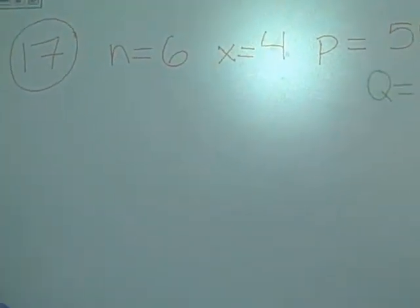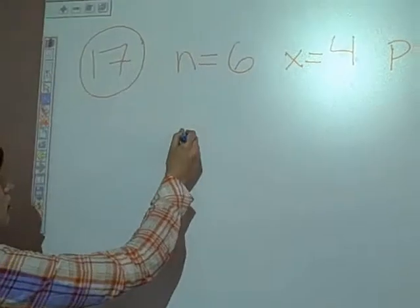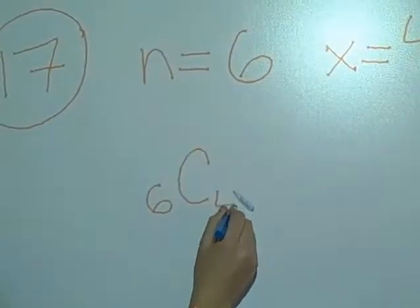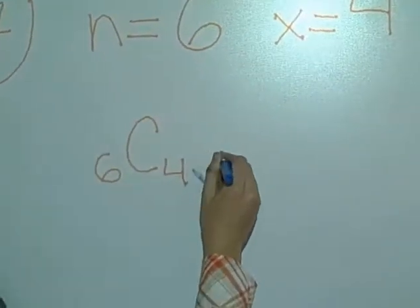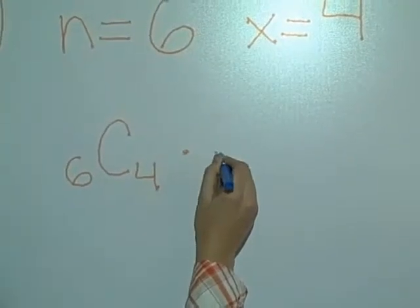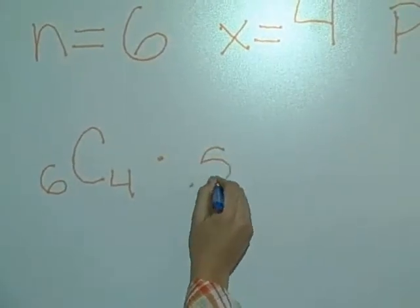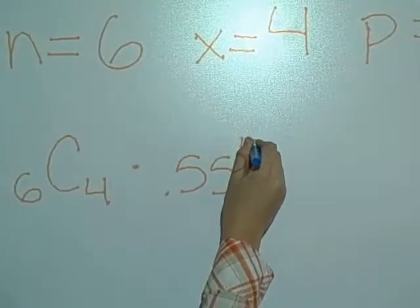So you take 6C4 times p, which is 0.55 to the x, which is 4.